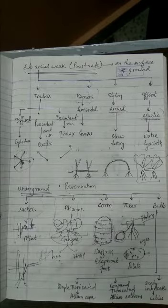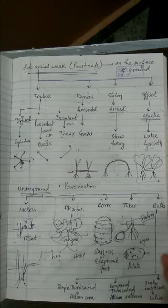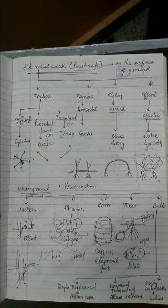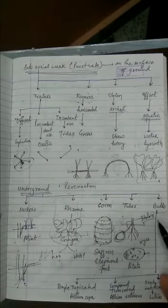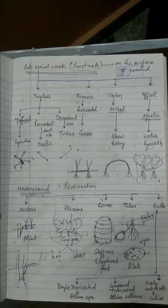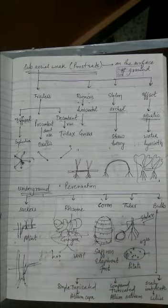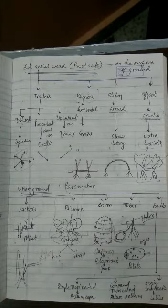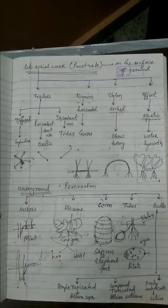The next type of underground stem is the bulb. Now, bulbs are of various types also. So let's understand. Bulb is also an underground perennating, perennating, spherical structure with reduced discoid stem.